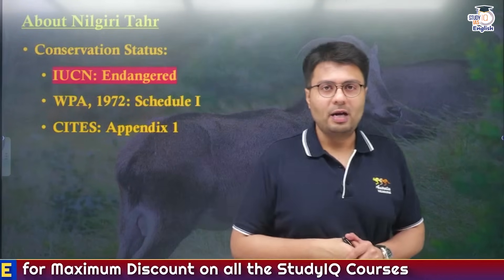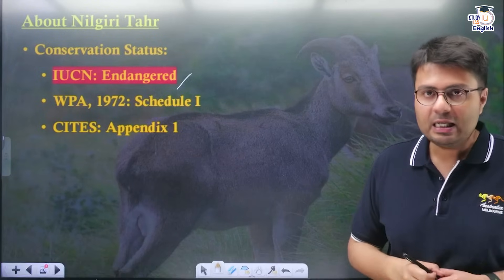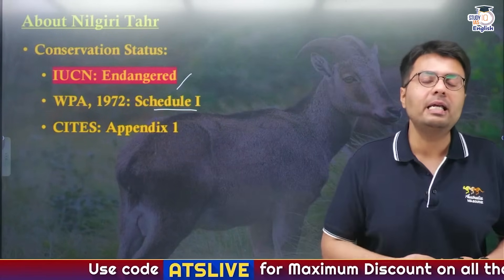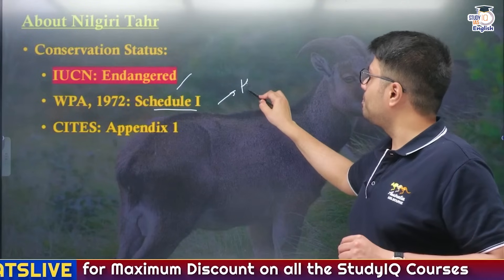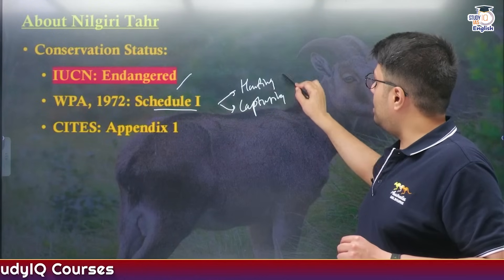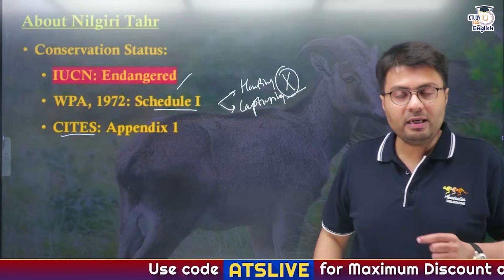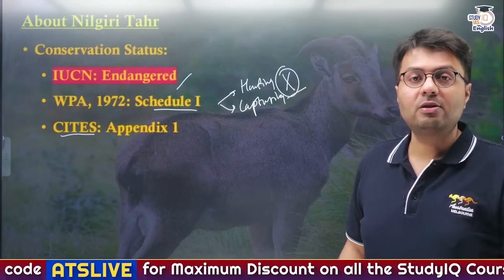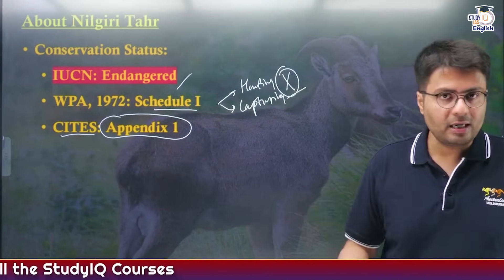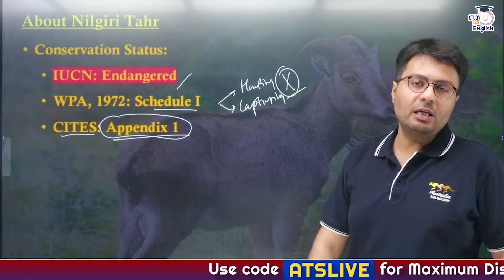Regarding protection status: Nilgiri Tahr is categorized as an Endangered species on the IUCN Red List. Under the Wildlife Protection Act of 1972, it is listed under Schedule 1, giving it the highest protection — hunting, capturing, and trade of this animal is prohibited by law and punishable severely. Trade is also prohibited under CITES Appendix 1, unless under emergency circumstances, to prevent its population from dwindling further.